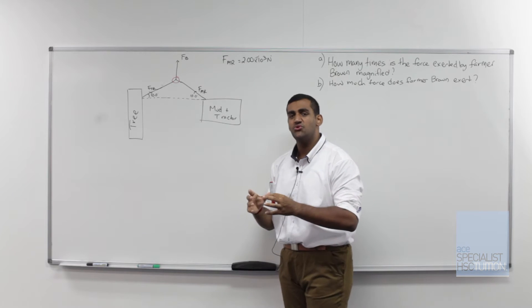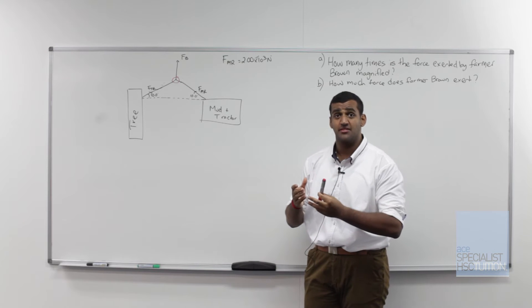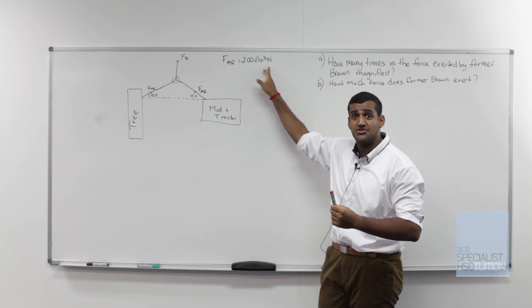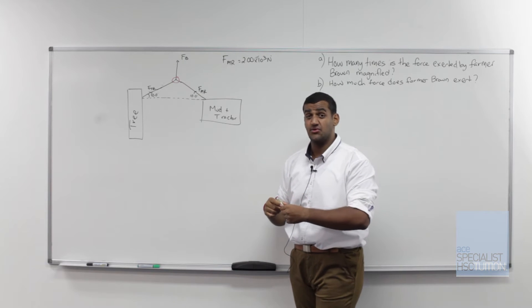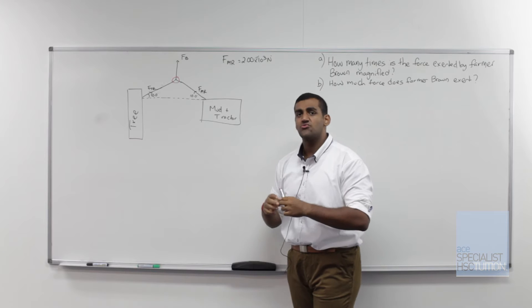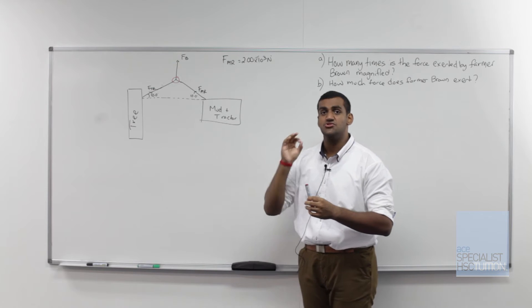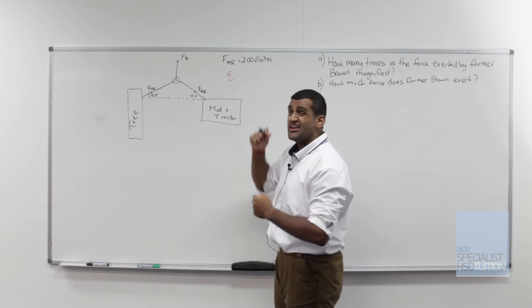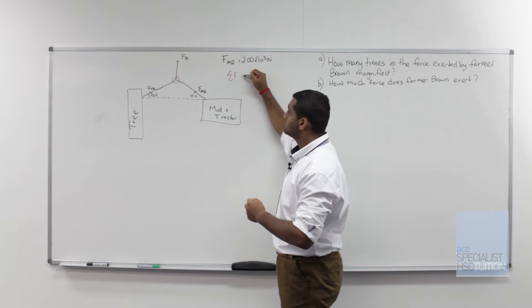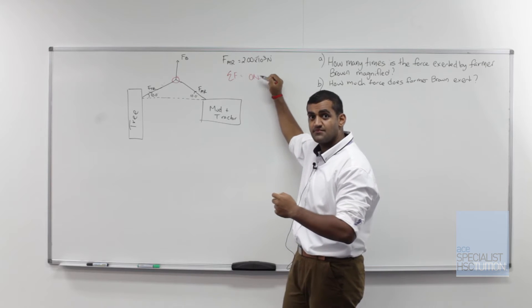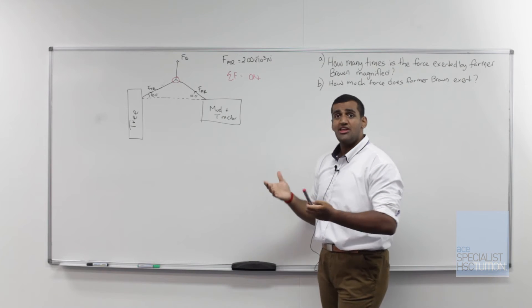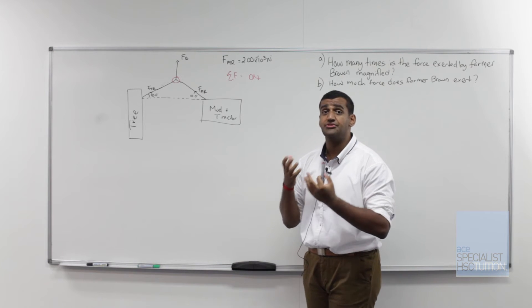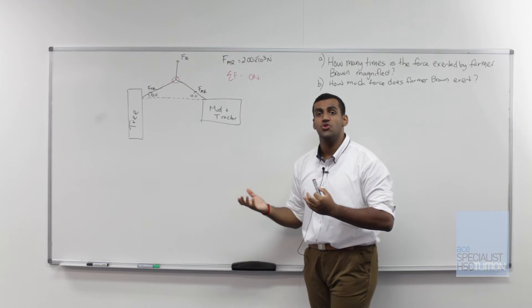In the question it tells you that at the moment where the tractor is just coming out of the mud, that force on the tractor is equal to 2,000 newtons or 2.00 times 10 to the 3 as given in the question. The reason why it's really important to understand that this is just as a tractor is coming out of the mud is because that means the net force or the sum of all the forces is 0 newtons. That's really important because that means that when we draw our free body diagram everything will cancel out. All the forces are meant to cancel out because there is no final acceleration.